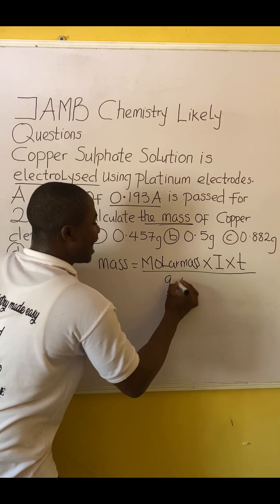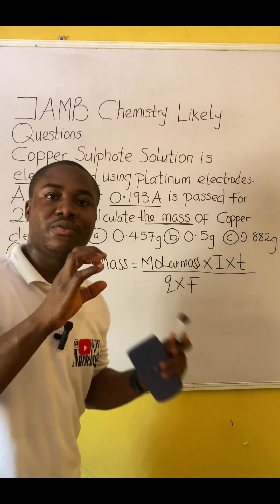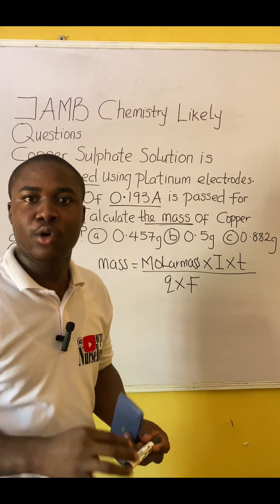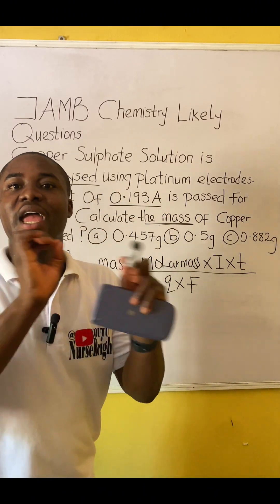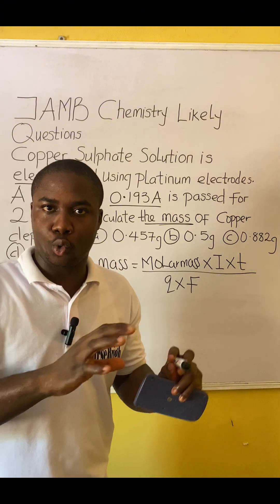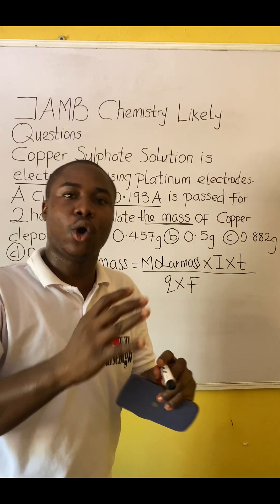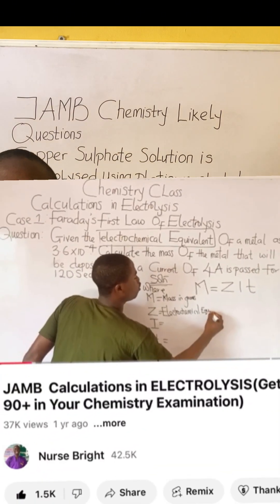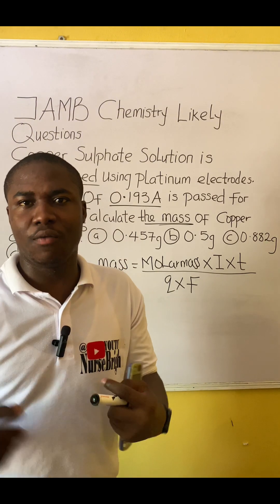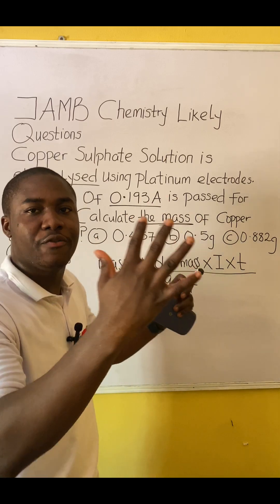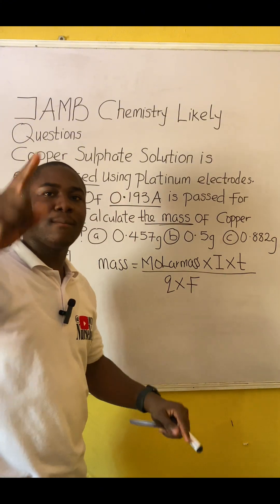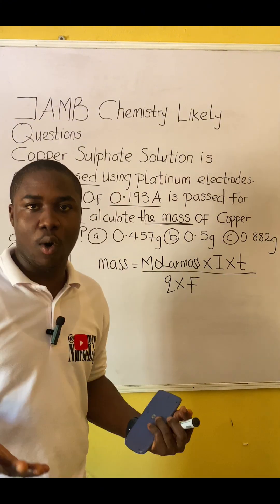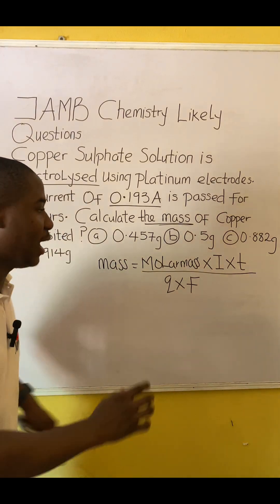If this question were on Faraday's first law of electrolysis, you would see 'z' in the question — z is called the electrochemical equivalent. If it's on Faraday's second law, the question will be relating two different metals. Moving further, let's analyze the parameters in the formula.